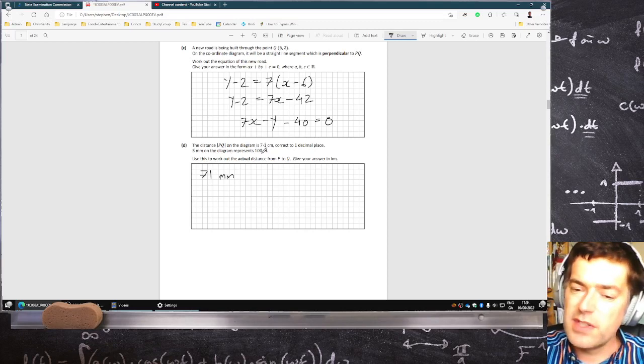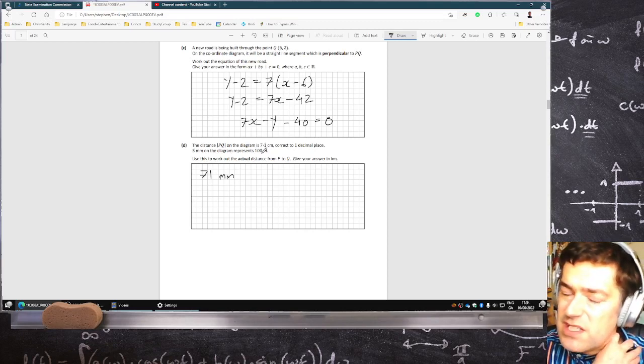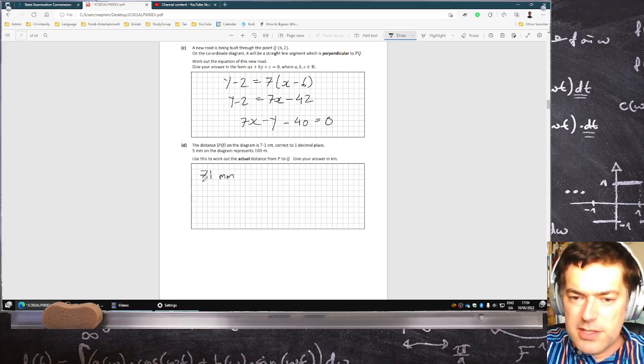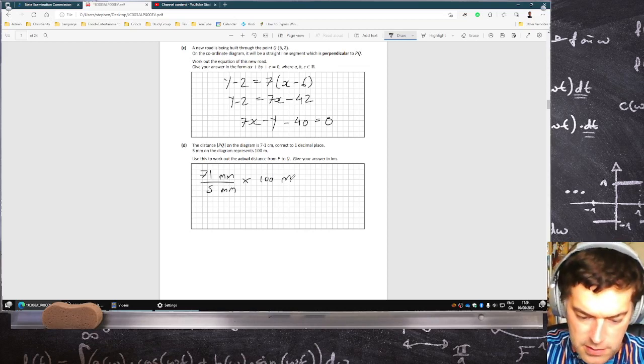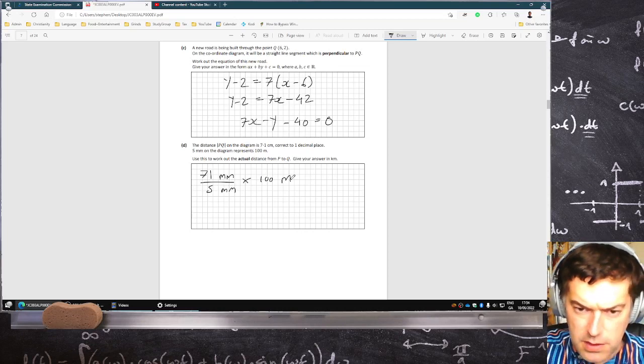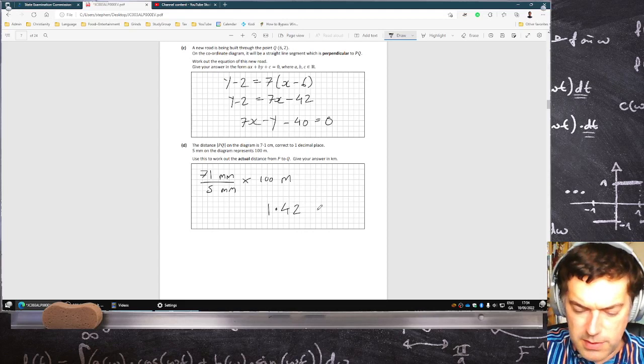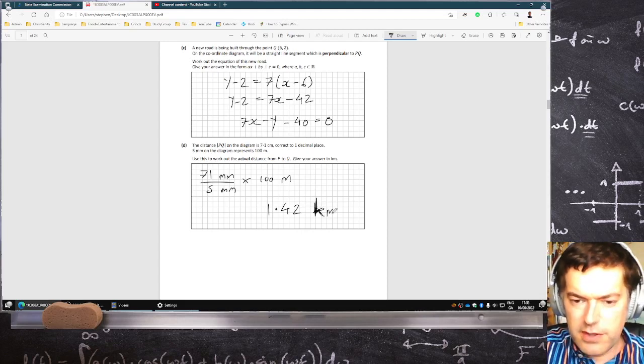But five millimeters represents 100 meters. So if I divide that by 5 millimeters and multiply it by 100 meters, the answer would be 1,420 meters. Or in other words, 1.42 kilometers.